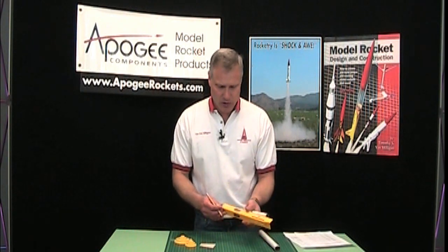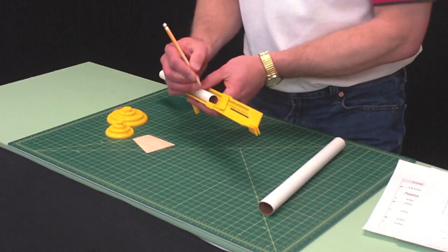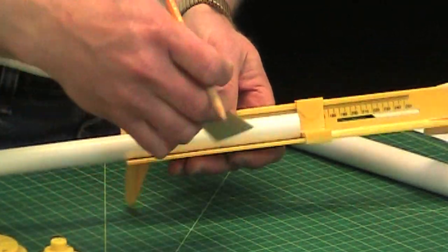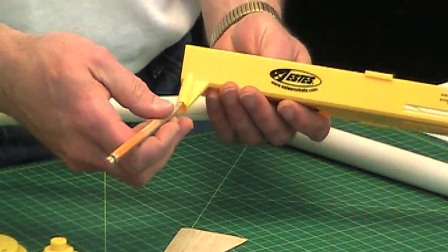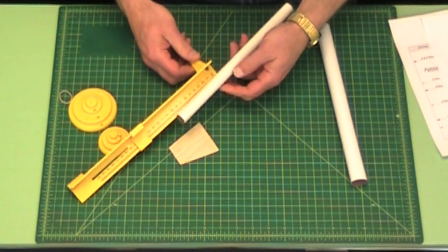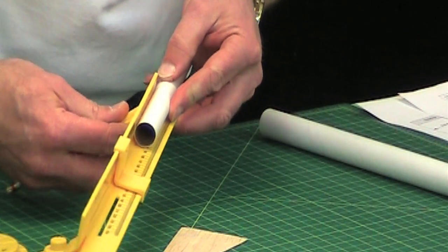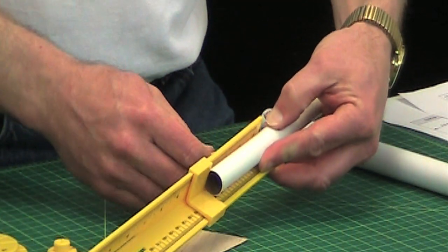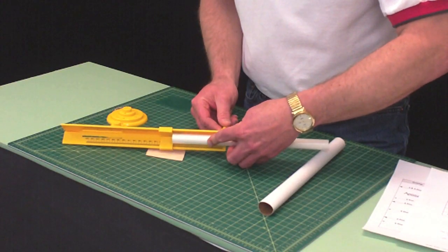The other thing that you can use this for is to draw lines around the tube. Say I needed a line right here for the front edge of the fin. So what I would do, stick a pencil in this little hole here and it comes out the other side, and I'll stick that on my tick mark here and slide this here like that, and then putting pressure on the pencil just draw a line around the outside of the tube like that.